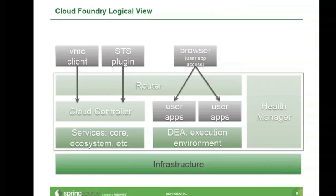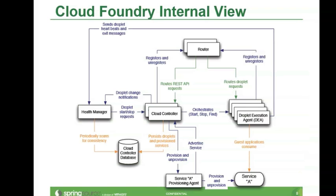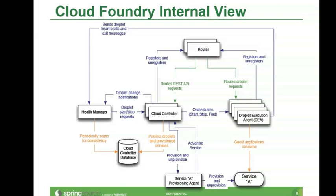Let's focus on the cloud controller. When STS was interacting, saying I want to start this application, or change the number of instances, or bind a service, it was talking to the cloud controller. So is VMC, so is Grails Shell — they were all talking to cloud controller. So when you wanted to push an application, you told cloud controller to start a new application. It started that application on the Droplet Execution Agent and bound that application's URL, publishing that URL to the router so the router can then serve that application.